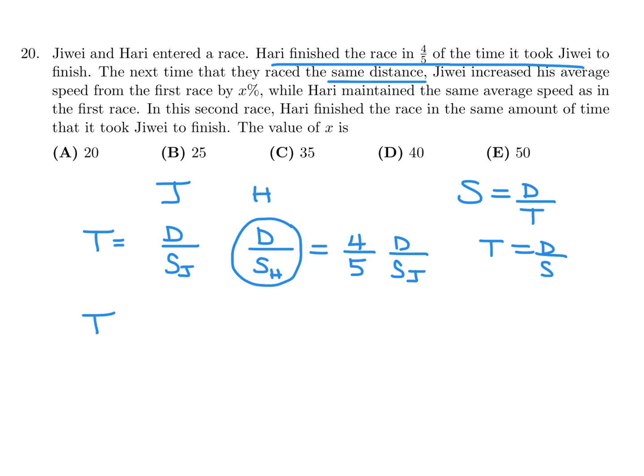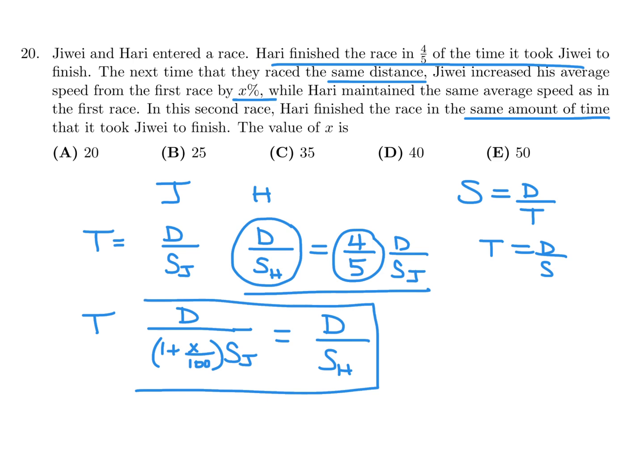And we know that this time is equal to four-fifths of the time for Jiwei. So that's really 4 over 5 times D over SJ. All right, so then we get to the second scenario, where then you have the same distance, but this time he's increased his speed by X. So he's increased it by X, so that you'd say 1 plus X over 100, because it's a percentage, and then multiplied by this original speed. And then for Hari, it's the same. Nothing changes for him, but at this point, they're saying that is equal, because now they finished in the same amount of time. Because here, there was not equal, it was this four-fifths business, but this time this is equal.